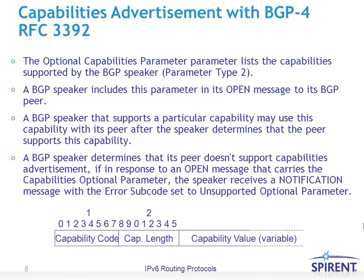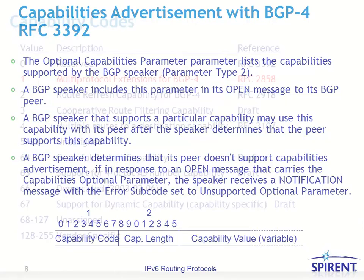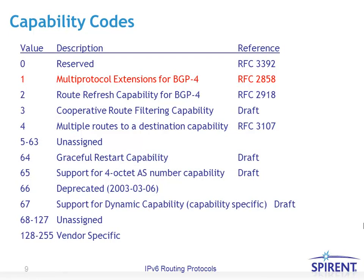RFC 3392 introduced a capabilities advertisement used in BGP open messages, allowing a speaker to communicate to its peer what capabilities it will support over that BGP session. When the BGP session is brought up, it includes the capability defined by the capability code, length, and value. Capability code value one is used when carrying IPv6 routes — it defines multi-protocol extensions for BGP, defined by RFC 2858.